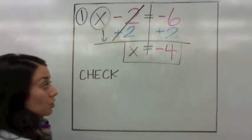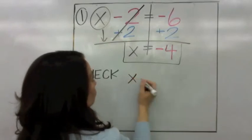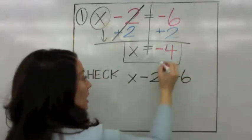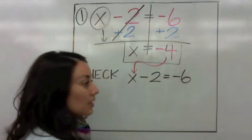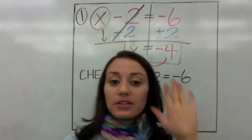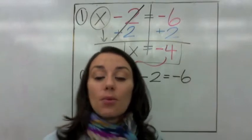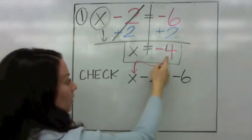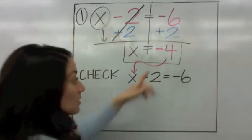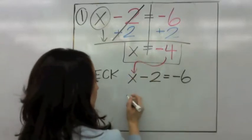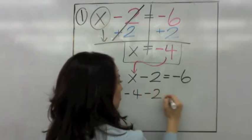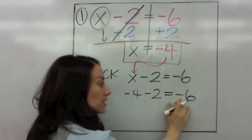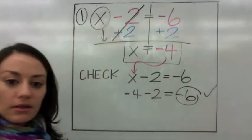We're going to check our answer using the original equation, which is x minus 2 equals negative 6. Substitute negative 4 in the place of x — substituting means putting a number in the place of a letter. So is negative 4 minus 2 equal to negative 6? Negative 4 and negative 2 are the same signs, so you add them: 4 plus 2, keep the sign — it's negative. That is correct.